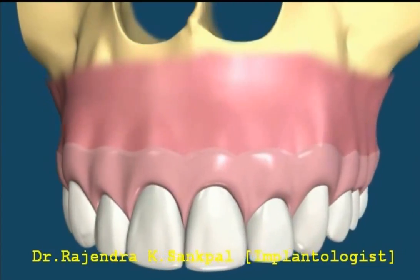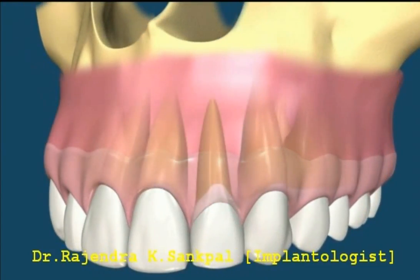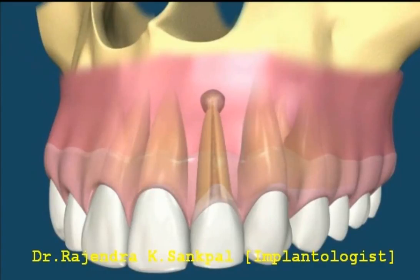This animation demonstrates apical surgery. When a tooth has pulpal problems it may have pathology, such as a cyst at the tip of the root. It starts out small but can grow and destroy bone as it expands.